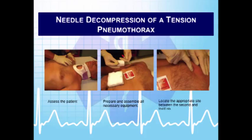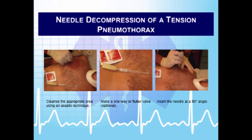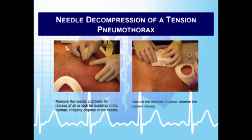The only contraindication to needling the chest is if the patient doesn't need it. The appropriate site is the second intercostal space in the midclavicular line, going over the top of the third rib — not beneath it — to avoid the nerves and blood vessels under the ribs. Insert at a 90-degree angle. You can use a syringe with saline — air bubbles will appear when you enter the pleural space, and you may hear a rush of air. Tape the catheter in place and apply a sterile dressing after the procedure.